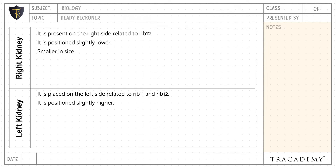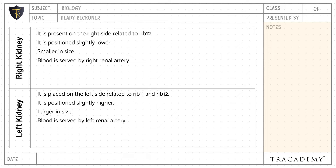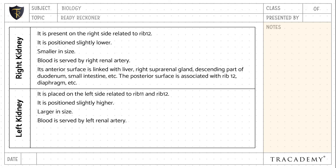The right kidney is smaller in size, whereas the left kidney is larger in size. Blood is supplied by the right renal artery to the right kidney, whereas for the left kidney, blood is supplied by the left renal artery.